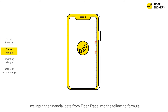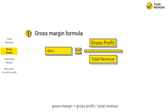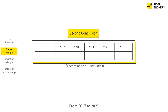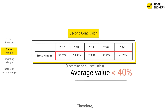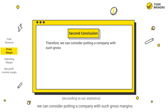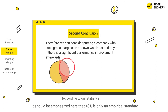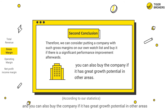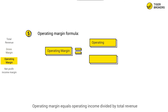For Apple's gross margin, we input the financial data from Tiger Trade into the formula: gross margin equals gross profit divided by total revenue. From 2017 to 2021, Apple's gross margin hovers consistently around 38 percent, but the average gross margin over the past five years still lags behind the 40 percent benchmark. Therefore, we can consider putting Apple on our watch list and buying it if there is a significant performance improvement. It should be emphasized that 40 percent is only an empirical standard — you can also buy a company if it has great growth potential in other areas.